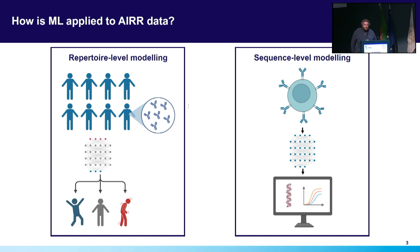At a high level, we first typically divide machine learning models in this area based on the type of input data that they deal with. In particular, a central division that we rely on is the division between those models which apply to repertoire-level data and make predictions at a subject level, or those models which apply to sequence or chronotype-level data and make predictions for individual sequences.